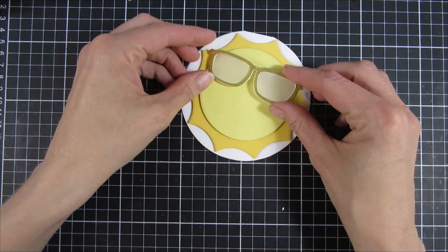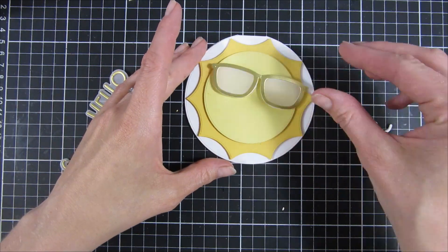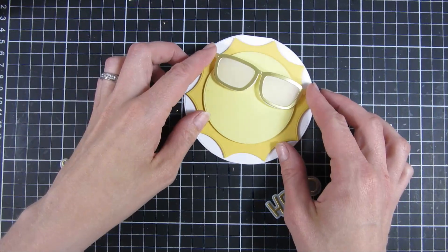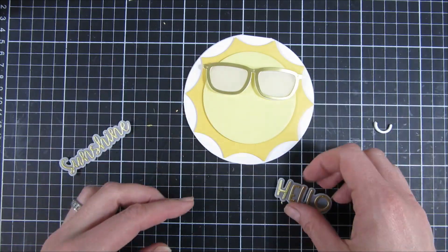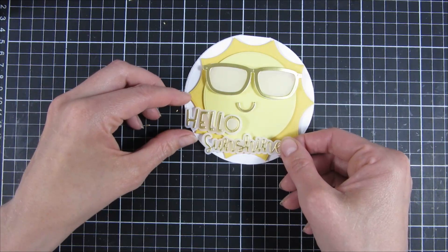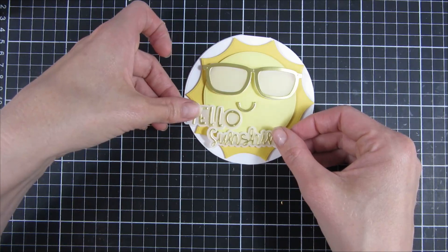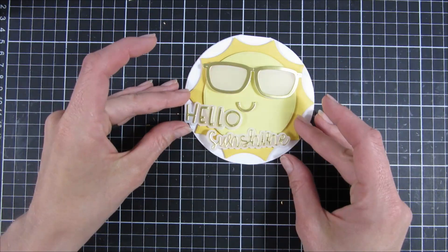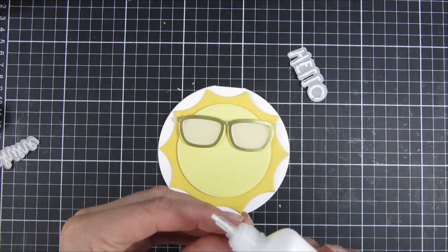You can see how our card base is starting to come together. We have the glasses on here and the sentiment. I had to figure out if I wanted the whole sentiment on the front like hello sunshine, but I opted for having the hello on the front and sunshine on the inside.